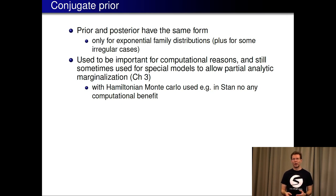It's still sometimes used for special models to allow partially analytic marginalization which can then give a big speed up but it's not needed specifically when we use for example dynamic Hamiltonian Monte Carlo in Stan there's no computational benefit of using conjugate prior unless we would do this analytic marginalization also.